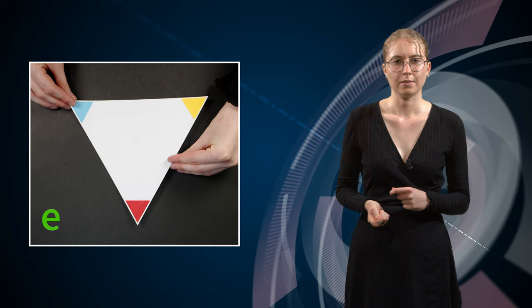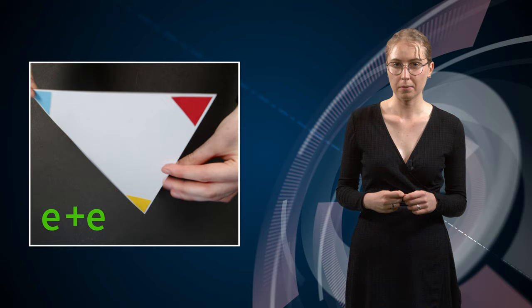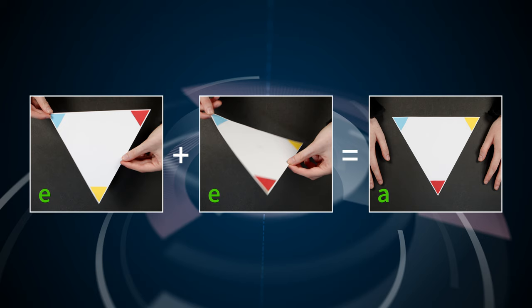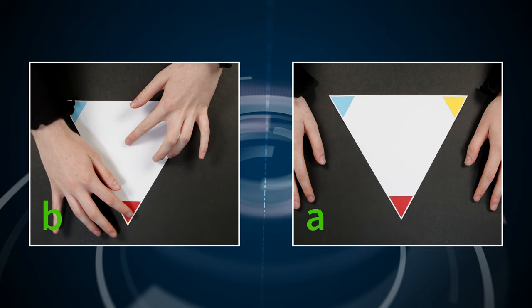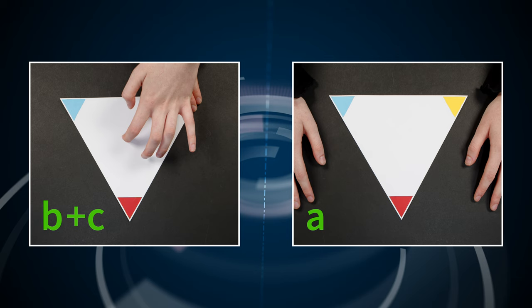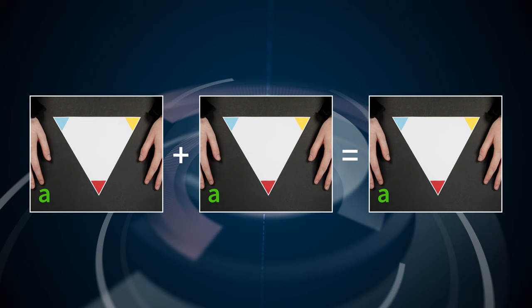The final rule a group must obey is that for every element, it should also contain a corresponding inverse element. This means that every action must have another action that can be applied after it to get the identity element — in other words, we have to be able to get back to the original triangle. For example, to get back to the original after action E, we must flip along that axis again, so action E is its own inverse, and E plus E is equal to A. Action B's inverse, however, is action C, and vice versa, since they add up to one full rotation and bring the triangle back to where it started. The identity element is its own inverse, so A plus A is equal to A.